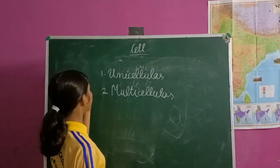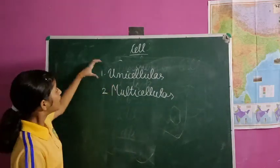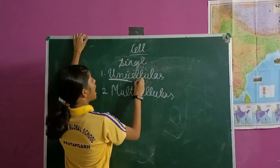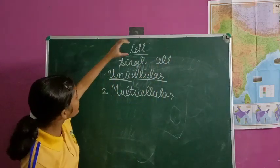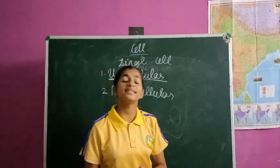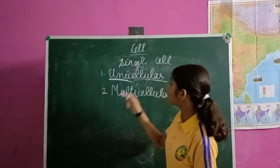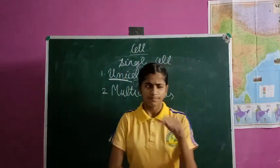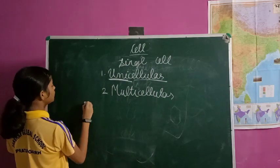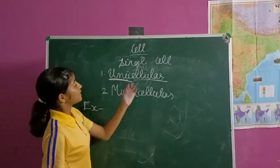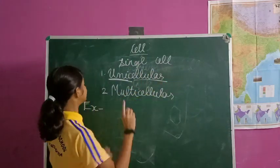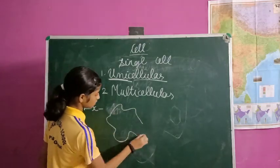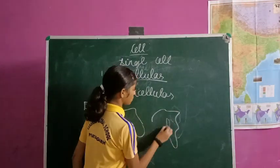What are unicellular and what are multicellular? Unicellular — if we see its meaning: 'uni' means single, and 'cellular' means cell, so single cell. The organisms that consist of a single cell are known as unicellular. Let's see an example of unicellular. An example is amoeba. Amoeba doesn't have a definite shape — it can be in any shape.